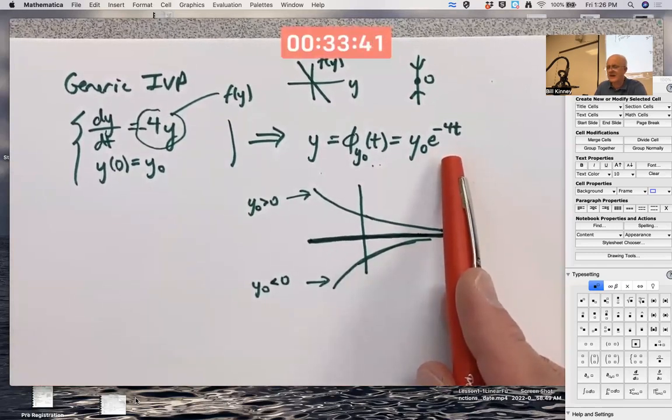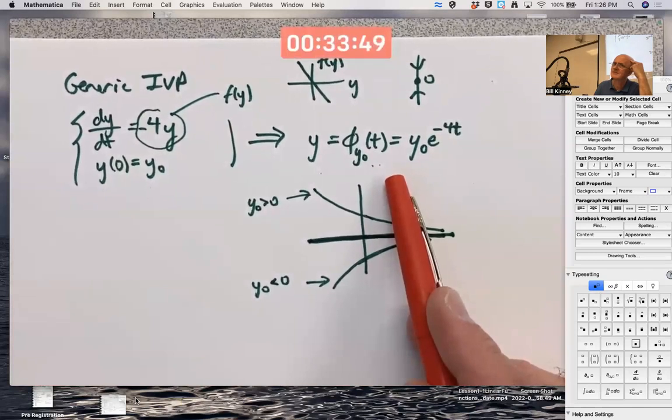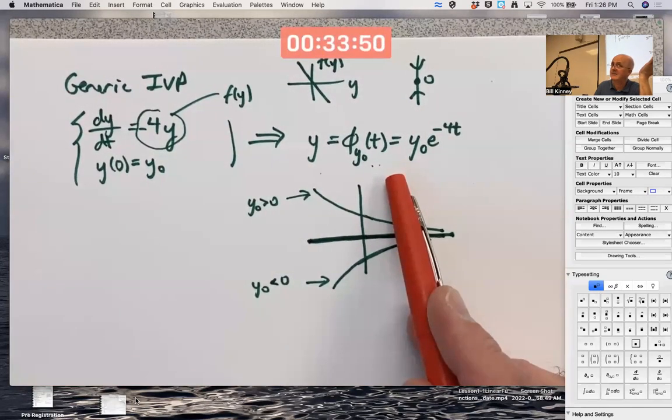Why not think of t is fixed and y_0 is the variable. I could do that if I wanted. A little weird, but I could.